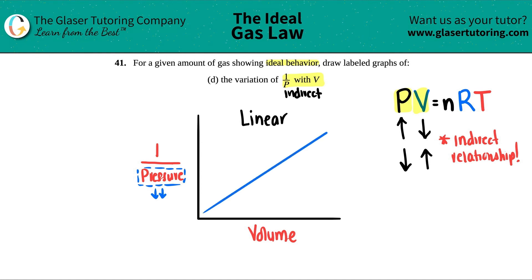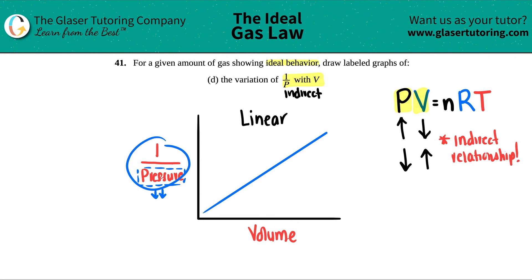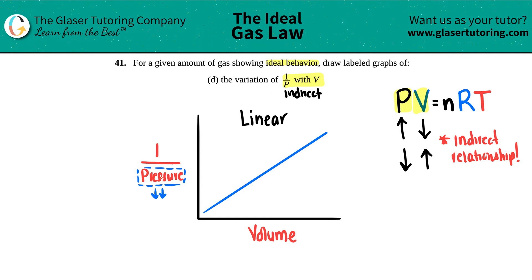And that is your answer. Remember, pressure is dropping as volume gets larger, but since we're doing 1 over that smaller and smaller number, 1 over P is actually getting bigger and bigger. And that's it.